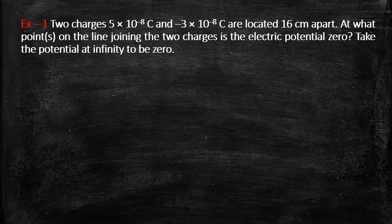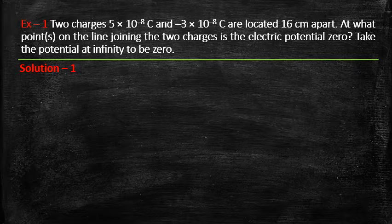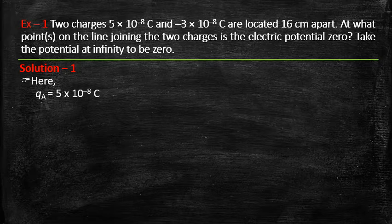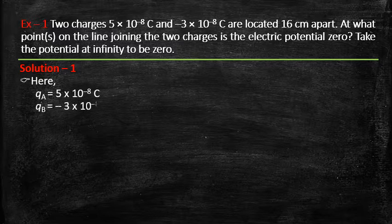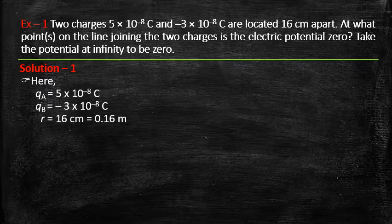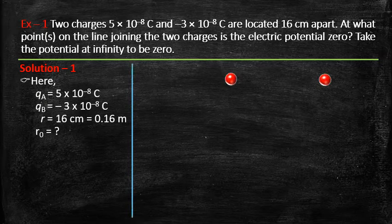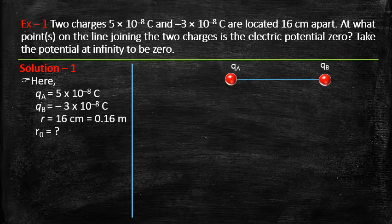Let us first collect data and understand the situation. We label 5×10⁻⁸ C as q_A and −3×10⁻⁸ C as q_B. The distance r between them is 16 centimeters, i.e., 0.16 meter. We regard r₀ as the distance at which potential is zero. The distance between the charges is 16 centimeters.